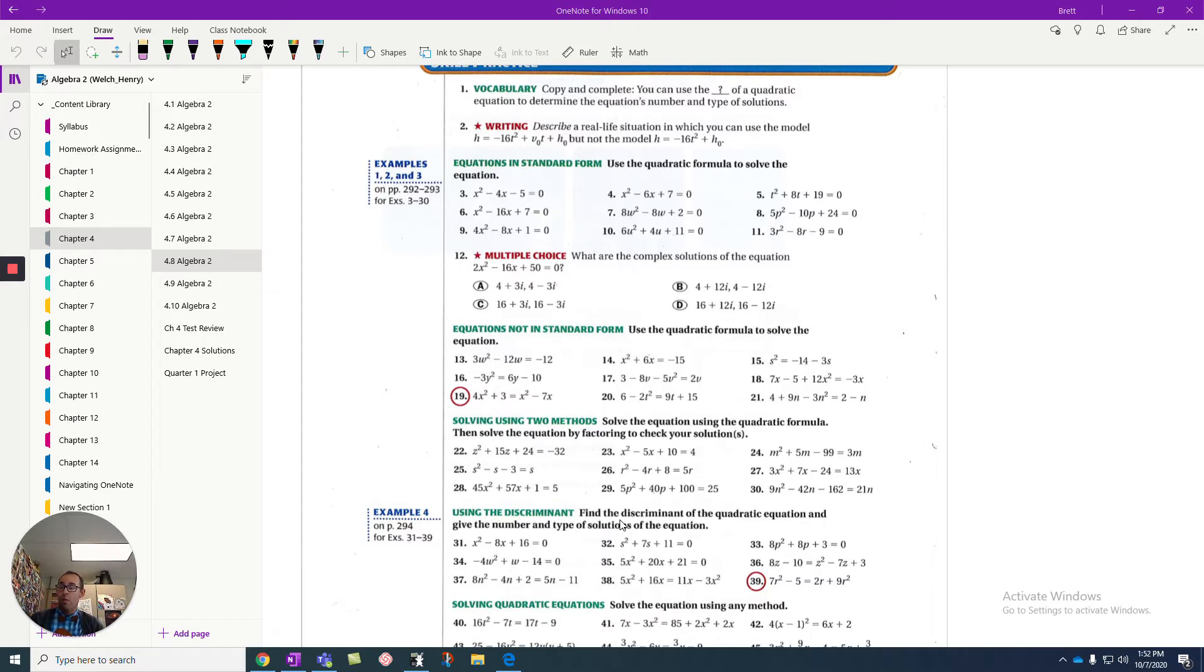The quadratic formula is negative B. Do that again. The quadratic formula is negative B plus or minus the square root of B squared minus 4AC all over 2A.